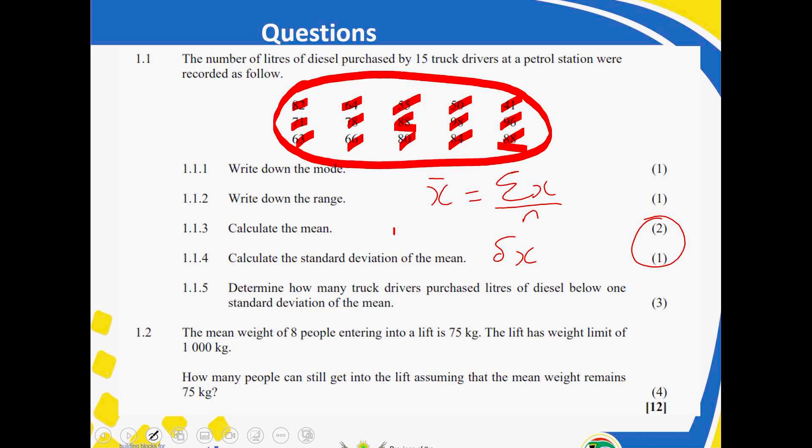Then, 1.1.5 depends on these two questions. So, there is a CA. If I can talk about CA, it's called consistent accuracy. Consistent accuracy means that you know what to do, but because you have made a mistake in the previous answer, we won't penalize you for that.